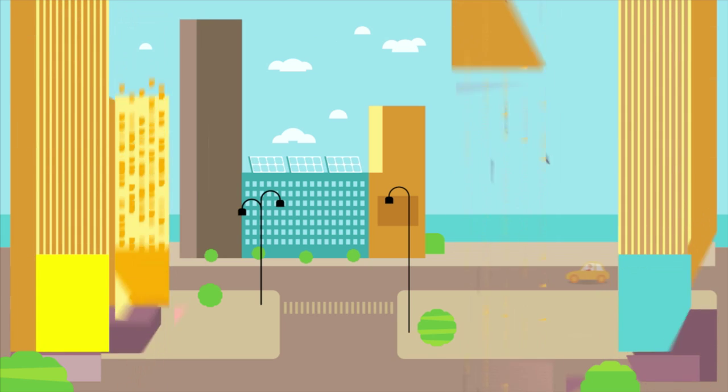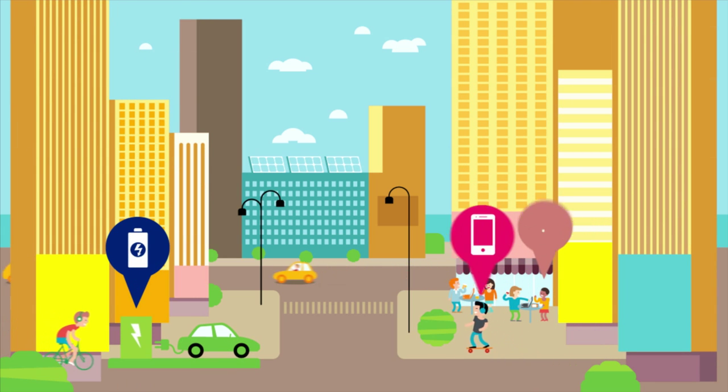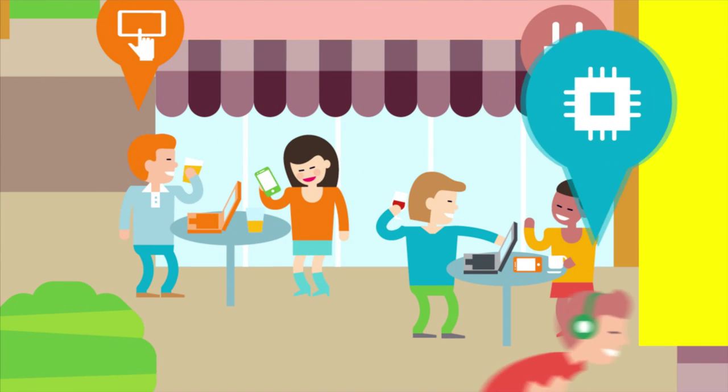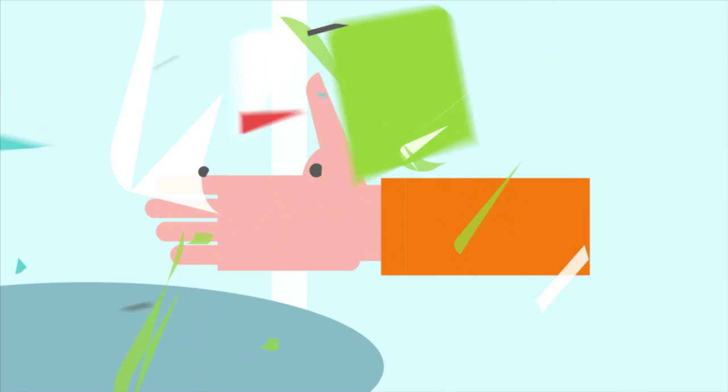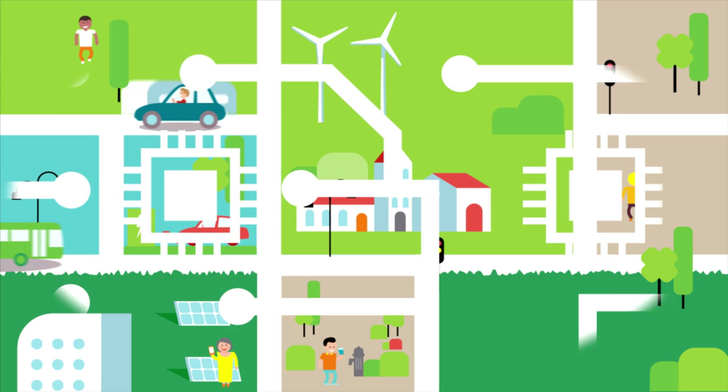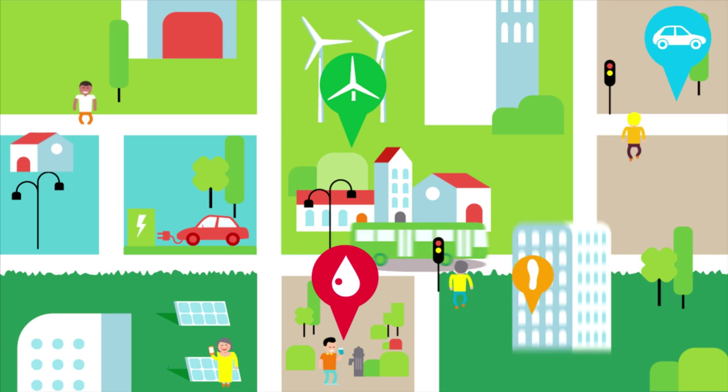Because electronic devices shape our daily lives and our future, chemistry is doing its part to make them smarter and more energy efficient. Very soon, chemistry will make their components more flexible, transparent and printable, and push back the limits of miniaturization.